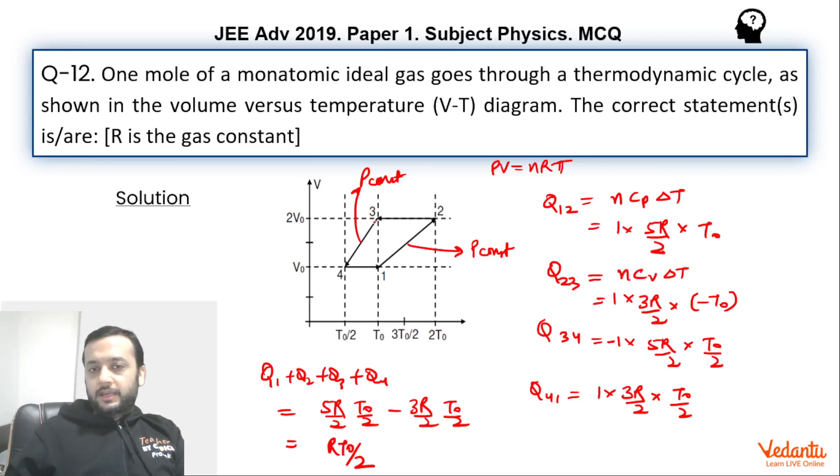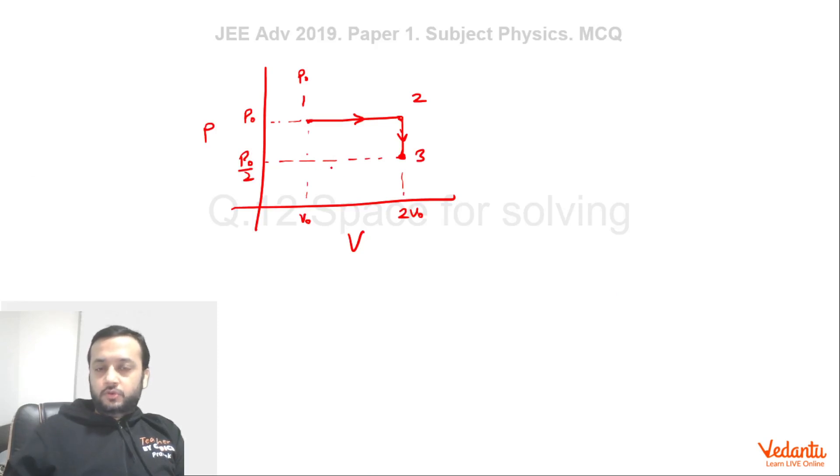From 3 to 4, again, we are moving at constant pressure and the volume has been halved. So constant pressure, volume is halved. That means from 2V0, we will go back to V0. This is point number 4.